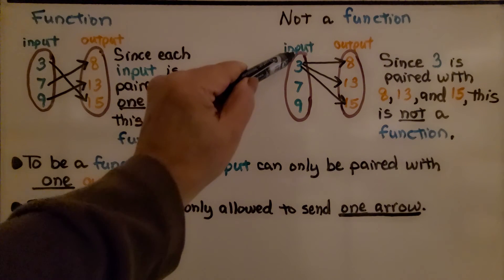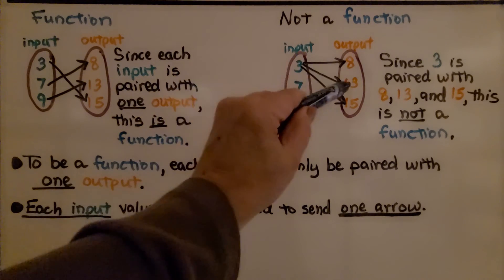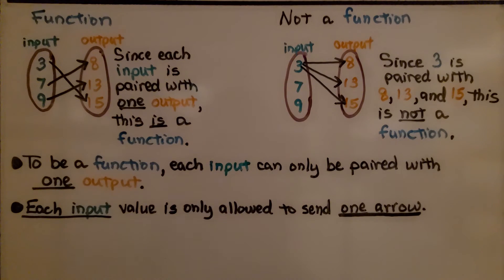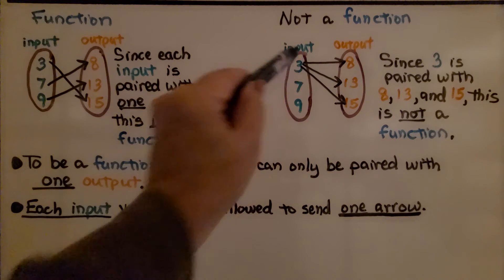Now this is not a function. Look at the input. The 3 is paired with three outputs. Since 3 is paired with 8, 13, and 15, this is not a function. It only can have one arrow coming out of the input.